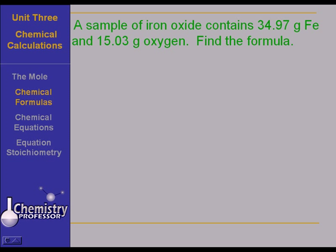Here is an example. We have a sample of iron oxide containing 34.97 grams of iron and 15.03 grams of oxygen. Let's find the formula.